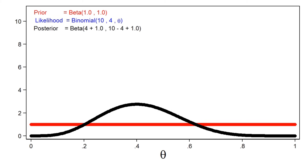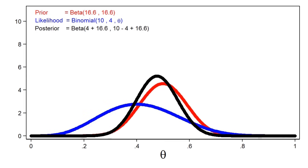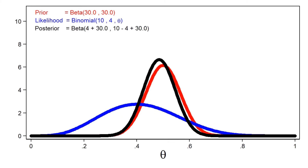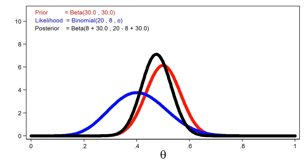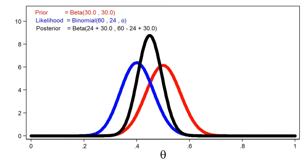Let's look at the effect of different priors on the posterior distribution. Here the red line represents a completely uninformative prior in the form of a beta distribution with parameters 1 and 1. The likelihood function is plotted in blue, but it is masked by the posterior distribution plotted in black. This is an important feature of Bayesian analysis: the posterior distribution will usually be equivalent to the likelihood function when we use completely uninformative priors. The animation shows that more informative priors will have greater influence on the posterior for a given sample size, and that larger sample sizes will give the likelihood function more influence on the posterior for a given prior distribution.